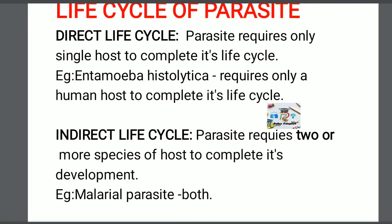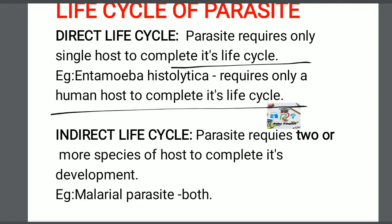Next is the life cycle of parasites. There are two types: direct life cycles and indirect life cycles. In a direct life cycle, a parasite requires only a single host to complete its entire development. Example is Entamoeba histolytica, which requires only a human host to complete its life cycle. In an indirect life cycle, a parasite requires two or more species of host to complete its development. Example is the malaria parasite, which requires both a human host and a mosquito host to complete its life cycle.